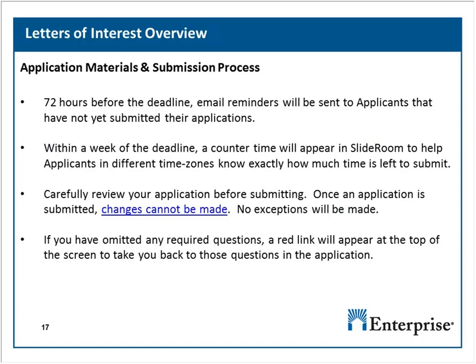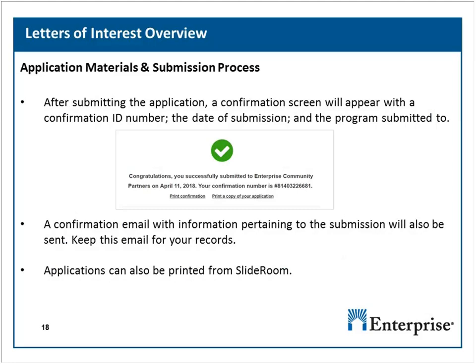Within a week of the deadline, anyone who hasn't submitted will see a countdown timer set to their time zone. We encourage you to carefully review your application before submitting, because once submitted, changes cannot be made — even if you submitted before the deadline. Enterprise will not approve any requests to edit an application after submission. If you miss a question, a red link will appear at the top of the screen. Once successfully submitted, you'll receive a confirmation message with a unique confirmation ID, the submission date, and the RFP name, and you'll also receive a confirmation email.